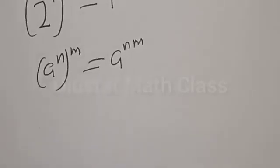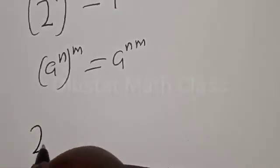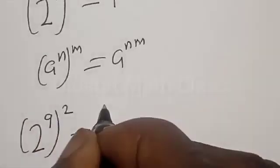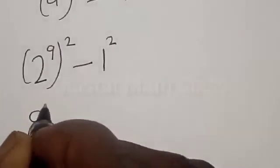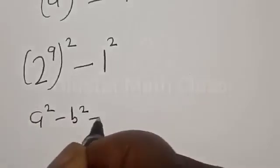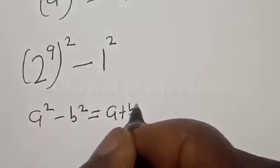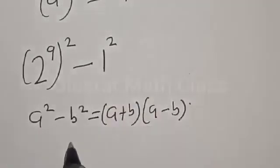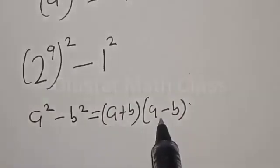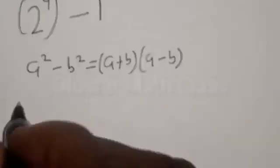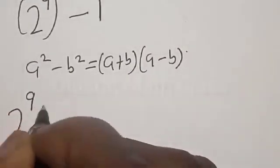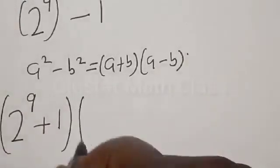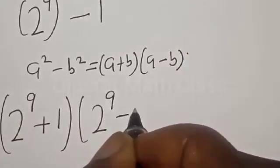So we have 2 raised to power 9 squared minus 1 is the same thing as 1 squared. Now, remember this. If you have a squared minus b squared is the same thing as a plus b multiplied by a minus b. Now, let's substitute where our a is 2 raised to power 9 and our b is 1. Then we have 2 raised to power 9 plus 1 multiplied by 2 raised to power 9 minus 1.